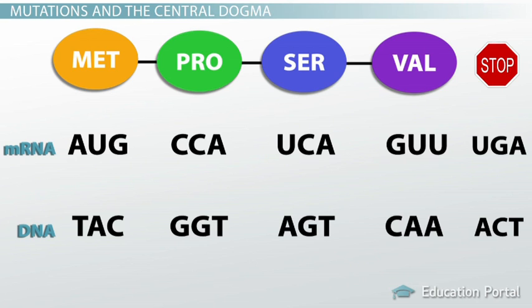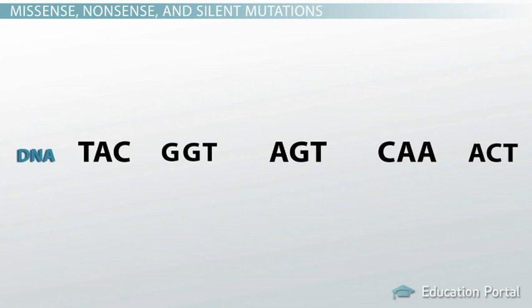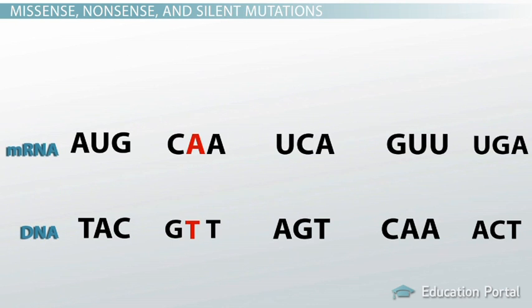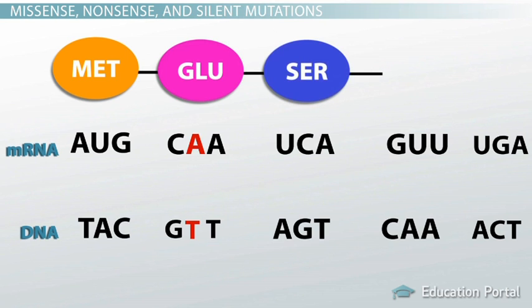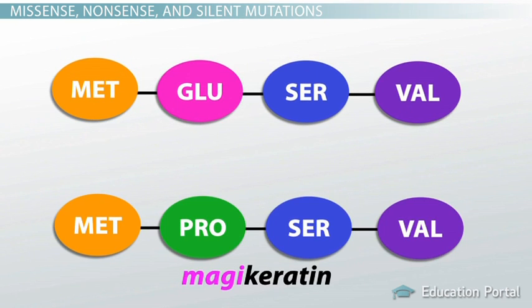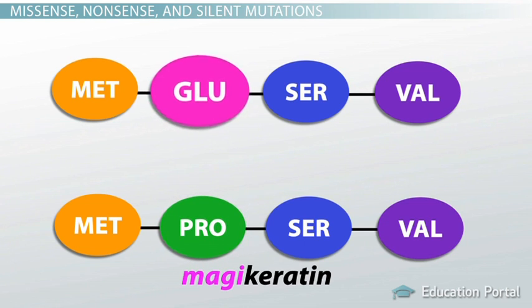Now we've got our DNA strand and we can try out our own point mutations. We're going to test a series of base substitutions. We'll first take the second G and replace it with a T. This yields a slightly different mRNA code. From our codon chart, AUG codes for methionine, CAA codes for glutamine, UCA codes for serine, GUU codes for valine, and UGA is a stop codon. Where proline was supposed to be the second amino acid, we got glutamine instead, so our protein is slightly off, and so are the feathers on our pink-winged pony.